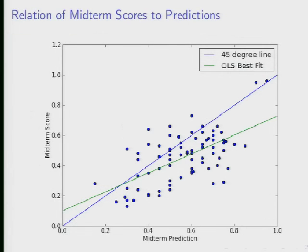The slope of the OLS fit is significantly less than one. People who are really good at predicting their scores wind up close to the blue line — the person who got 96 was very accurately predicted. There's also a rather poor performer who was nevertheless reasonably accurate in their prediction.